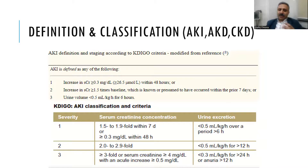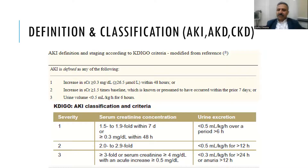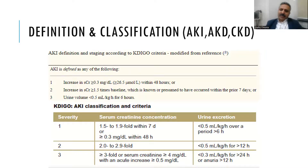Acute kidney injury has also been classified using different criteria. One is the RIFLE criteria, but the most commonly used — and the one you should use — is the KDIGO AKI Network classification. Stage one is the same as the definition of AKI: more than 0.3 mg/dL rise in creatinine, or less than 0.5 mL/kg/hour urine output. Stage two is a two- to three-fold rise in creatinine, or urine output decreased to 0.5 mL/kg/hour for more than 12 hours.